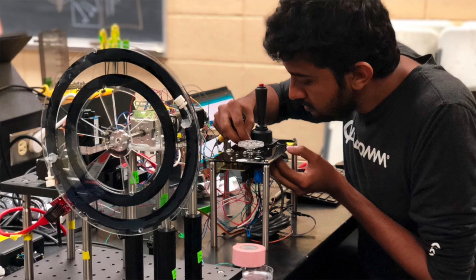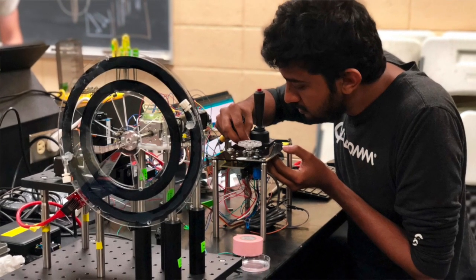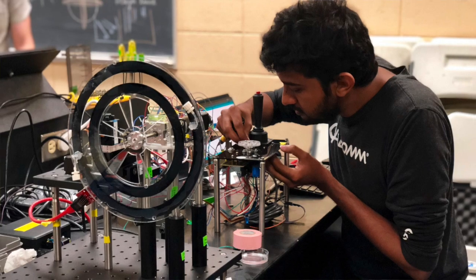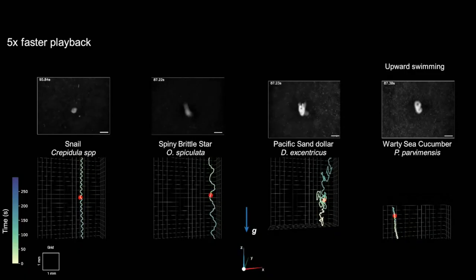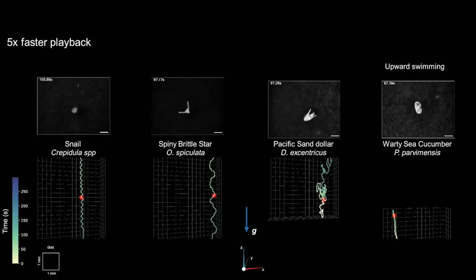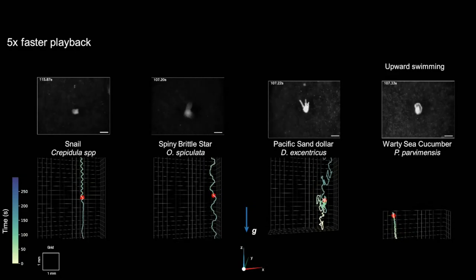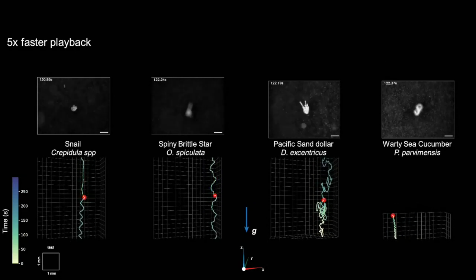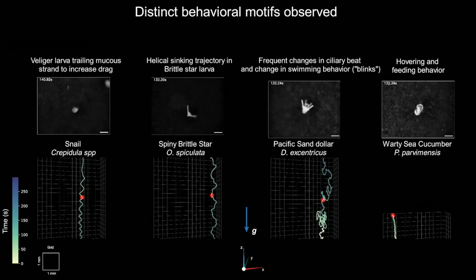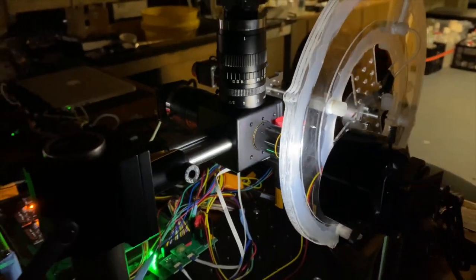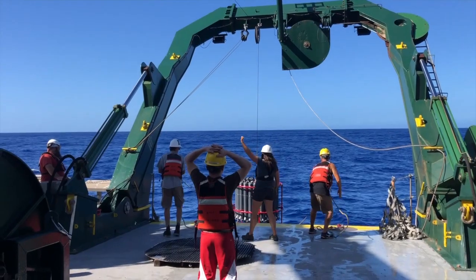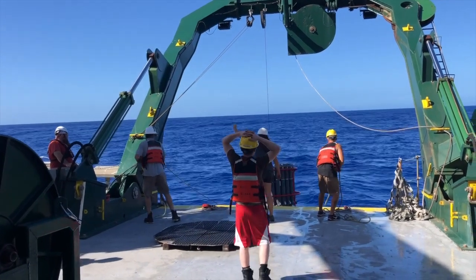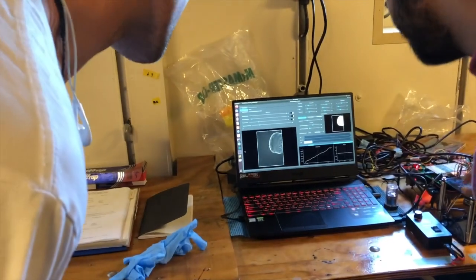The gravity machine that people have seen now versus the gravity machine that existed early on are dramatically different. It's kind of like an intelligent microscope — it knows where to look for the organism based on what the organism is doing. That evolution is quite beautiful, because the current version we can literally take this machine on a research vessel which is wobbling 10 degrees back and forth — hard for us to stand — while this machine is tracking a single organism.